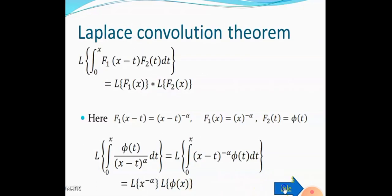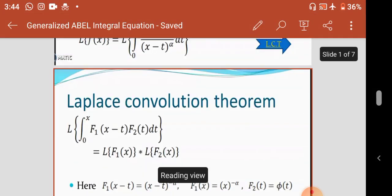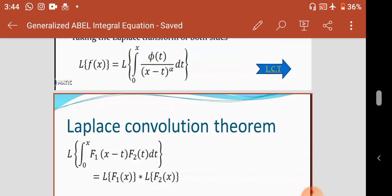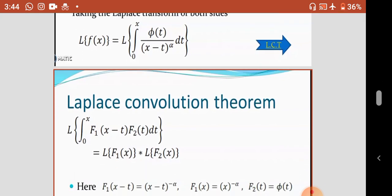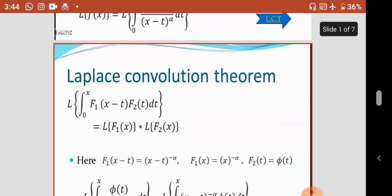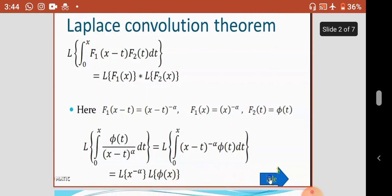We apply the convolution theorem. From the convolution theorem, the Laplace of the integral from 0 to x of f1(x minus t) into f2(t) dt is equal to Laplace of f1(x) into Laplace of f2(x). So the first function is (x minus t) raised to minus alpha, and the second function is phi(t). So f1(x minus t) equals (x minus t) raised to minus alpha, meaning f1(x) equals x raised to minus alpha, and f2(x) equals phi(x).